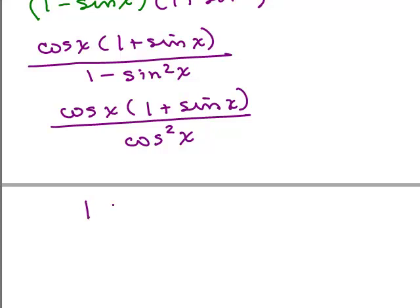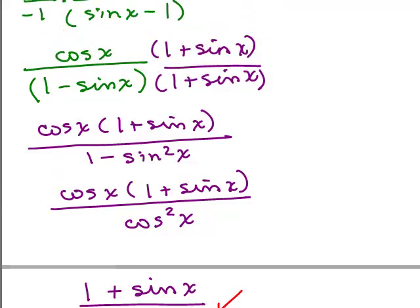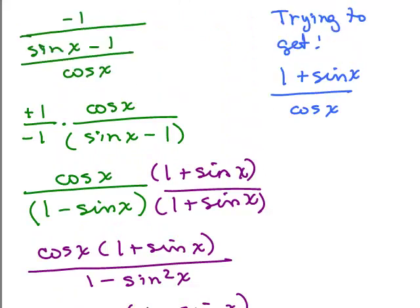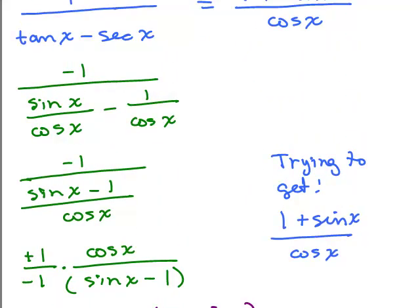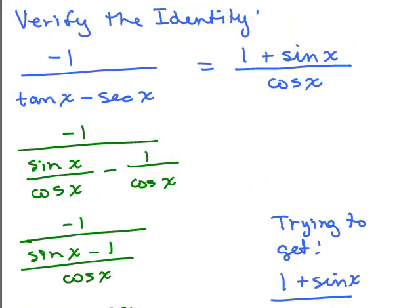So the last thing is that's 1 plus sine x over cosine x. And remember, that's what we were trying to get, so we're done. So this took a little bit of writing. So here we go, back up to the beginning. Alright, there's where we started.